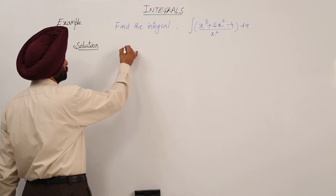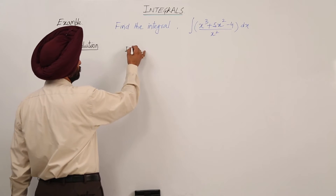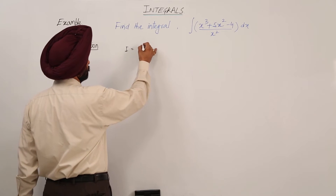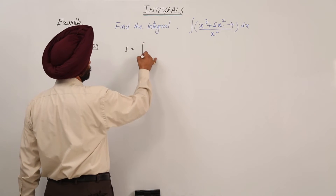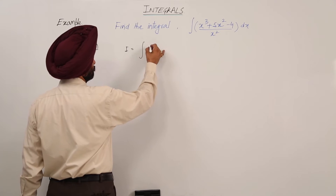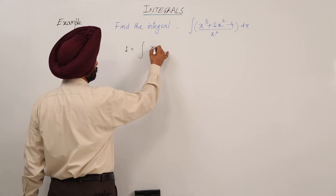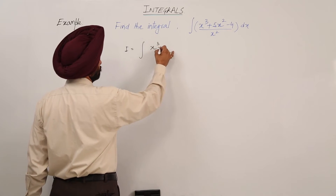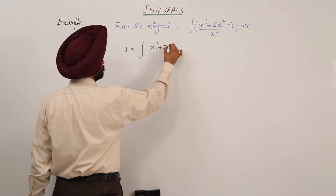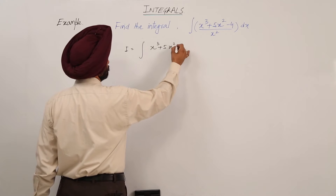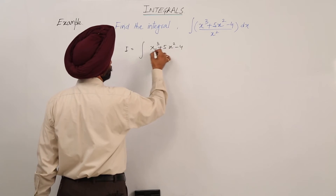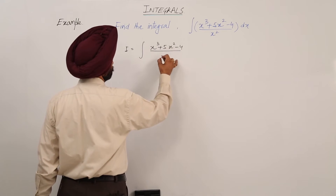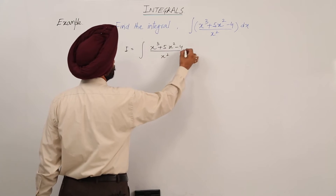In this question, we are having integration of x cube plus 5x square minus 4 upon x square dx.